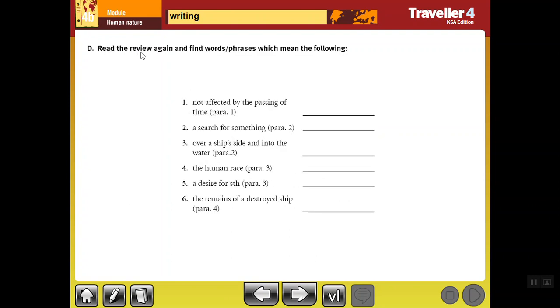The next exercise: you're asked to read the review again and find words and phrases which mean the following. In this part, you are going to learn some important key or new vocabulary. A word or phrase which means not affected by the passing of time - لا يتأثر بمرور الوقت. It's timeless. The second one: a search for something - بحث. This is in paragraph two. Quest or search.